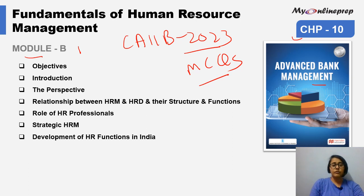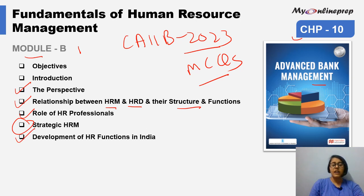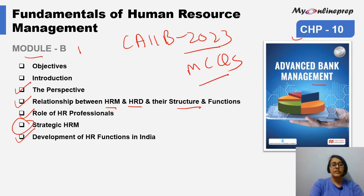In this chapter we have to study about the introduction of human resource management, its perspective, the relationship between HRM and HRD, their structures as well as their functions, the role of HR professionals, strategic HRM — which is of very high importance — and the development of HR functions in India. Without further ado, let us start with our first question from this chapter.